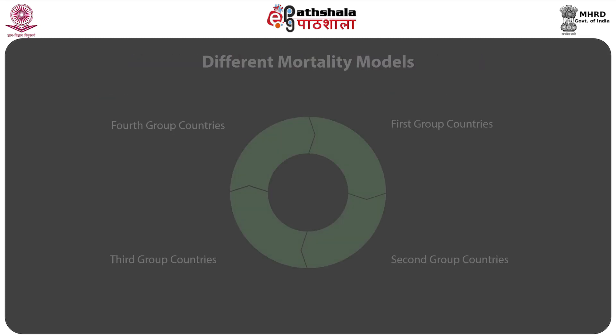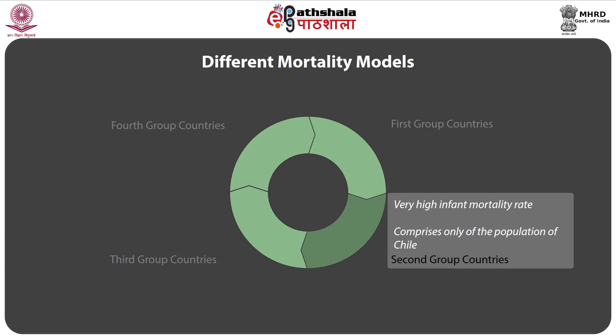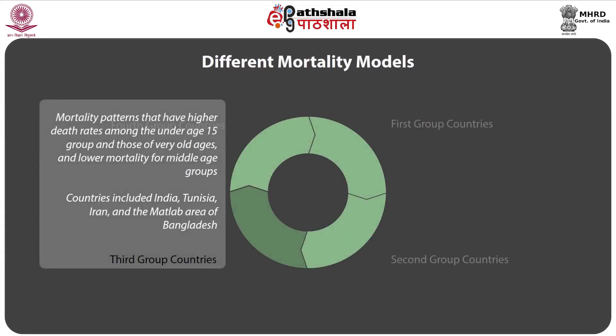The first group includes countries with high levels of infant and child mortality, high young adult mortality, but lower mortality at older ages — including Colombia, Costa Rica, Mexico, Peru, the Philippines, Sri Lanka, Guatemala, Honduras, Thailand, and El Salvador. The second group comprises only Chile, whose mortality pattern is similar to group 4 except for very high infant mortality. The third group includes India, Tunisia, Iran, and the Matlab area of Bangladesh, with higher death rates among those under age 15 and very old ages, but lower mortality for middle age groups.